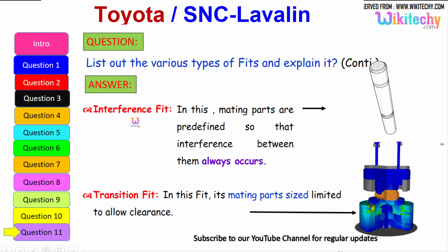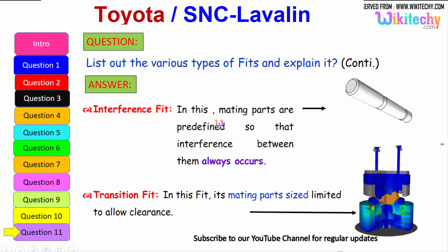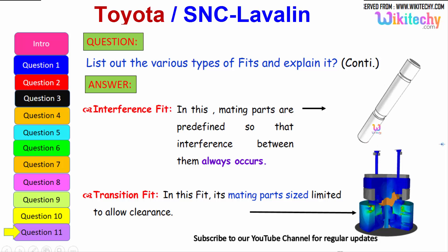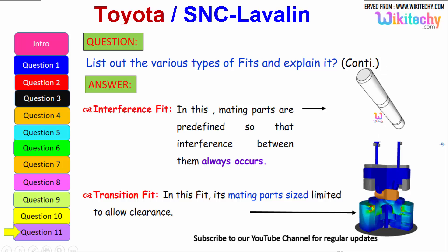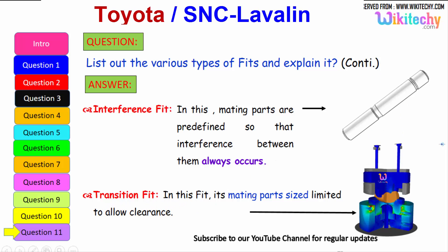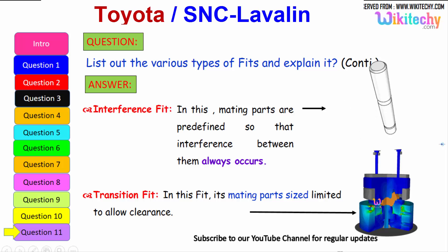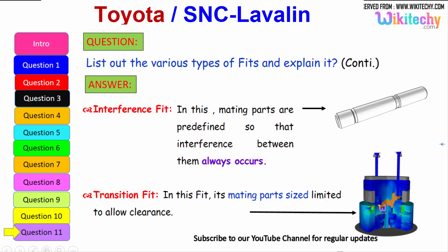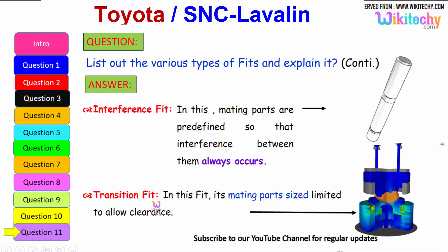In interference fit, the mating parts are predefined so that interference between them always occurs. The final one is transition fit — in this fit, mating parts are sized to allow a low clearance, so there is not an exact fitting and forcing it may cause breakage. You can see the greenish one in the diagram — that is the transition fit.